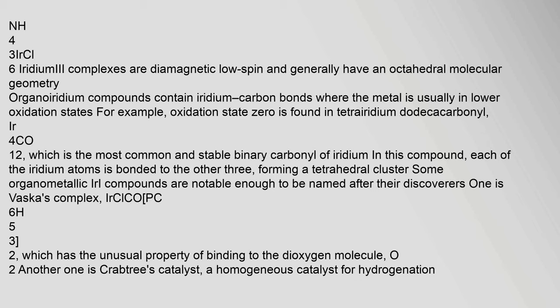Iridium complexes are diamagnetic, low spin and generally have an octahedral molecular geometry. Organoiridium compounds contain iridium-carbon bonds where the metal is usually in lower oxidation states; for example, oxidation state zero is found in tetrairidium dodecacarbonyl, Ir4(CO)12, which is the most common and stable binary carbonyl of iridium. In this compound, each of the iridium atoms is bonded to the other three, forming a tetrahedral cluster. Some organometallic Ir(I) compounds are notable enough to be named after their discoverers: one is Vaska's complex, IrCl(CO), which has the unusual property of binding to the dioxygen molecule O2. Another one is Crabtree's catalyst, a homogeneous catalyst for hydrogenation.